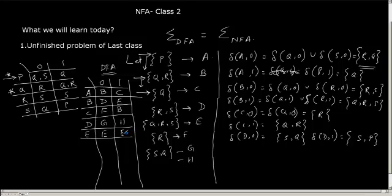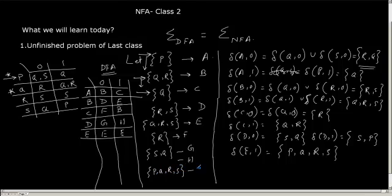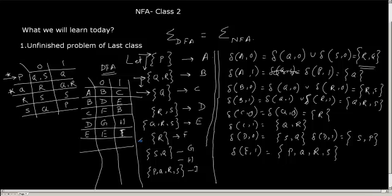With Q comma 1 being QR, R comma 1 being S, and S comma 1 being P, delta of E comma 1 will be P, Q, R, S. So it will be again a new set of states — you can put I. We are creating states whenever needed, first checking if the transition function result set is already in our table. If it is not there, we create one and add one more row to the transition table. This is the way to solve this problem.